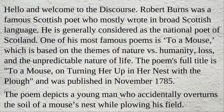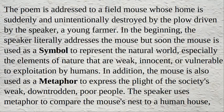The poem depicts a young man who accidentally overturns the soil of a mouse's nest while ploughing his field. The poem is addressed to a field mouse whose home is suddenly and unintentionally destroyed by the plough driven by the speaker, a young farmer. In the beginning, the speaker literally addresses the mouse, but soon the mouse is used as a symbol to represent the natural world, especially elements of nature that are weak, innocent, or vulnerable to exploitation by humans.